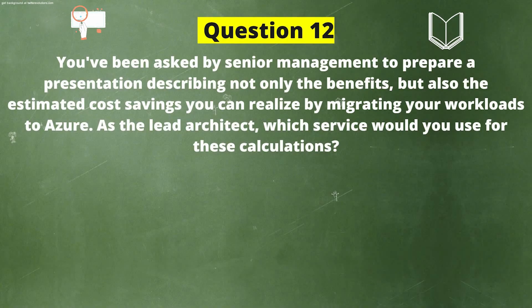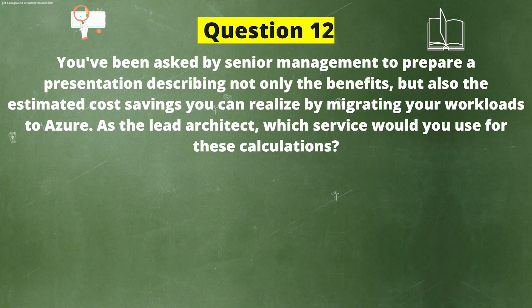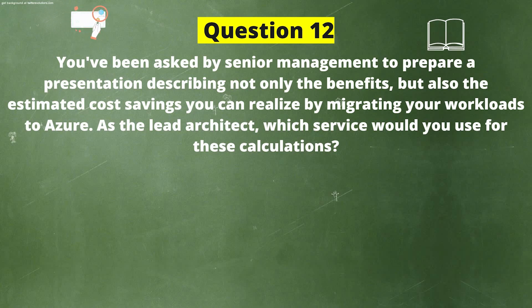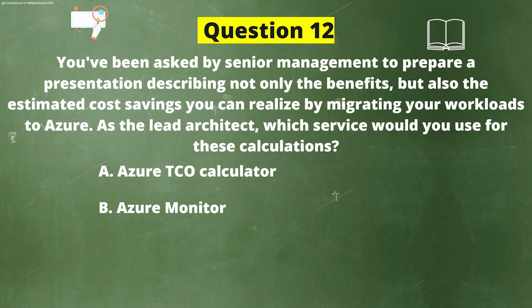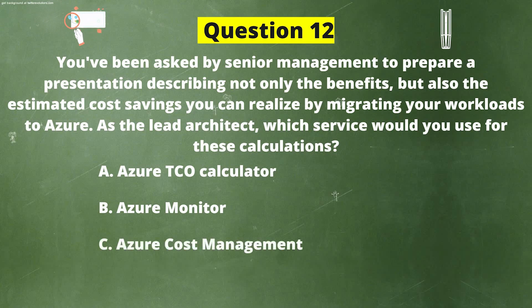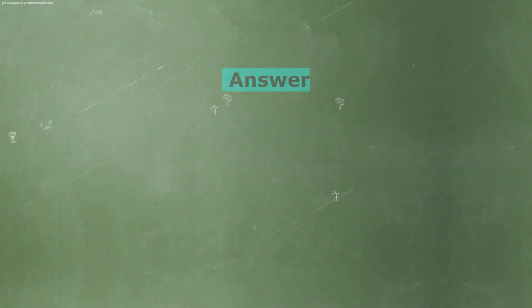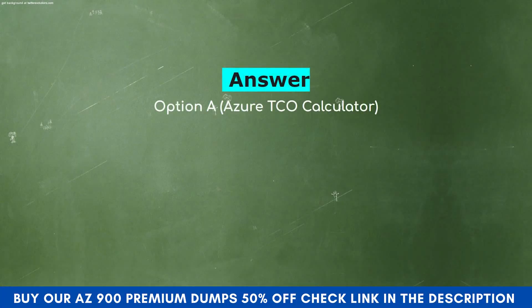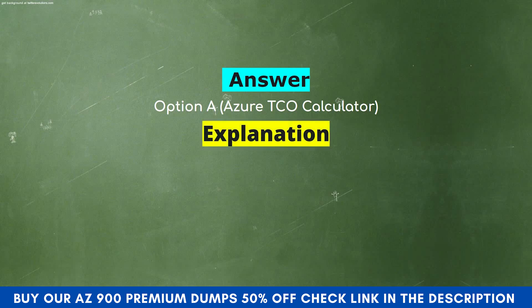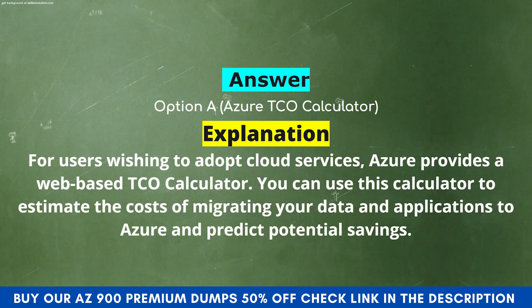Next question. You have been asked by senior management to prepare a presentation describing not only the benefits but also the estimated cost savings you can realize by migrating your workloads to Azure. As the lead architect, which service would you use for these calculations? Option A: Azure TCO Calculator. Option B: Azure Monitor. Option C: Azure Cost Management. Option D: Azure Advisor. The correct answer is Option A — Azure TCO Calculator. For users wishing to adopt cloud services, Azure provides a web-based TCO calculator you can use to estimate the cost of migrating your data and applications to Azure and predict potential savings.